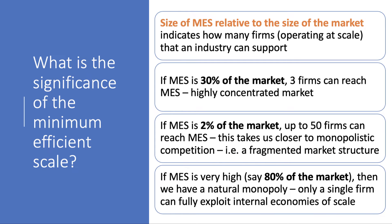If MES is 30% of the market, that suggests the market is oligopolistic — perhaps a duopoly with two dominant firms like Coca-Cola and Pepsi, or Airbus and Boeing. However, if the minimum efficient scale is very low — let's say just two percent of the market — then up to 50 businesses can reach MES, which takes us much more towards monopolistic competition or even perfect competition: a less concentrated, much more fragmented market structure with a low concentration ratio. And going back to the natural monopoly example, if the MES is very high — say 80% of the market — only one single supplier can fully exploit internal economies of scale; we call that a natural monopoly.